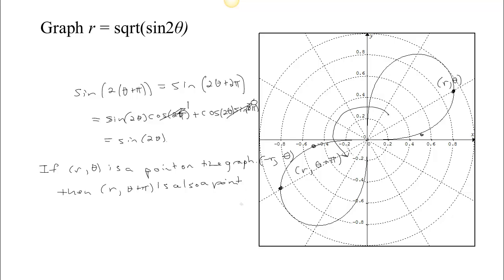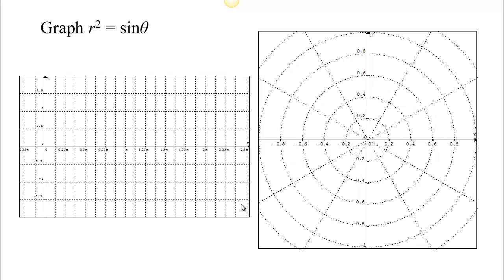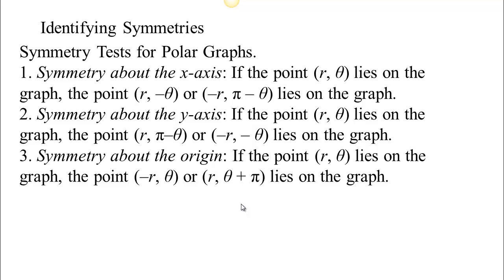This, then, is the characterization of what it means to have origin symmetry. If you have a function with origin symmetry, if (r, θ) lies on the graph, then the point (-r, θ) or (r, θ + π) also lies on the graph.